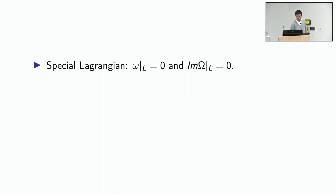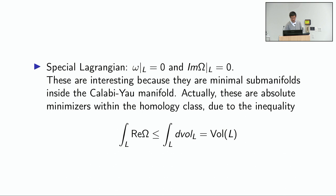The Lagrangian condition is that you restrict the symplectic form to your submanifold and require it to vanish — such things are known as Lagrangians, studied in symplectic topology. Special Lagrangian imposes the additional requirement that you take the holomorphic volume form, take the imaginary part, and restrict it to zero. This is an n-form on your n-dimensional Lagrangian, and you require it to vanish identically. Lagrangian is a fairly flexible condition; special Lagrangian is a very rigid condition, coming in finite-dimensional moduli spaces.